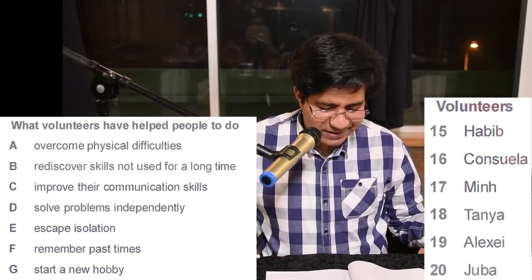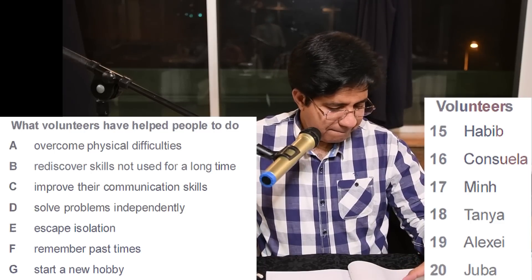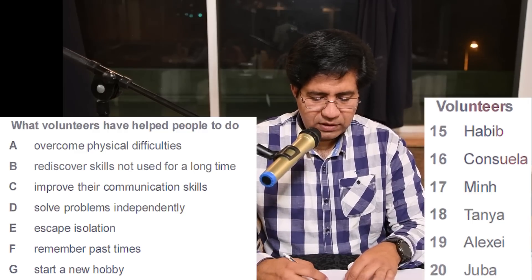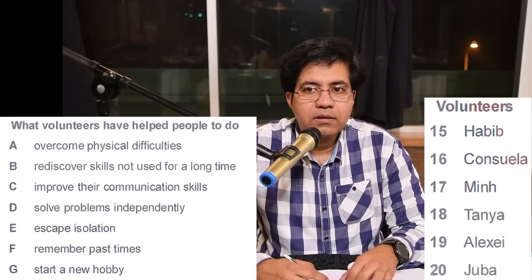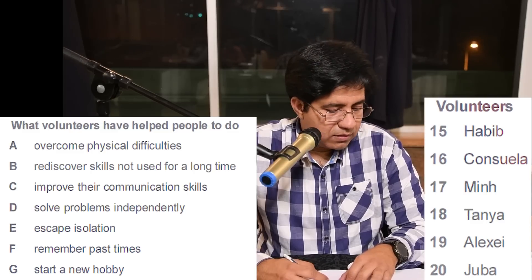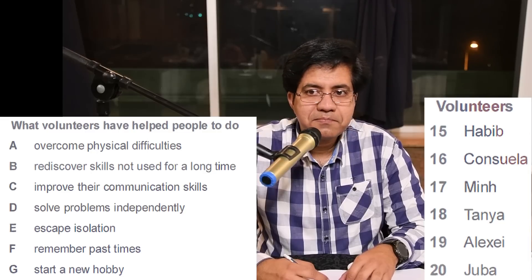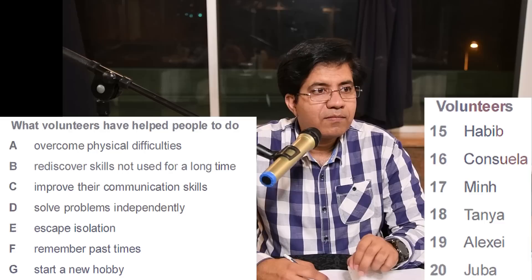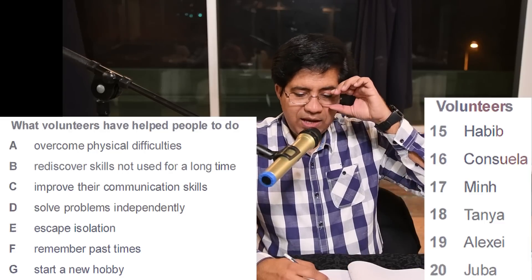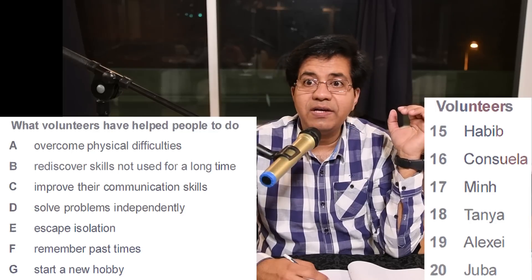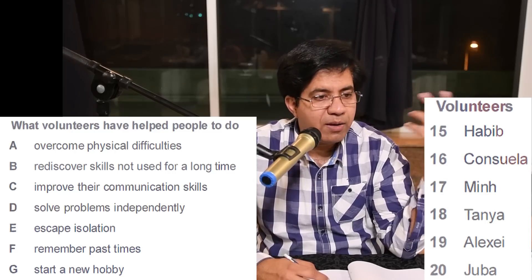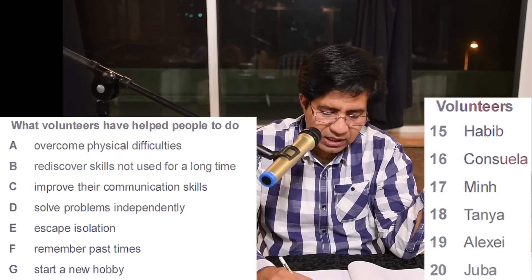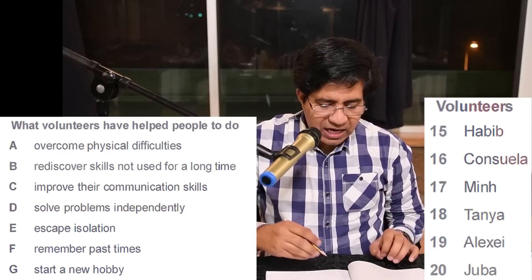Consuela is an amazing woman — she has difficulty walking herself but doesn't let that stop her. She helps a couple of people with similar difficulties who had almost stopped walking altogether. By using herself as an example, Consuela encourages them to walk more and more. So A — overcome physical difficulties — is the right answer for question 16.